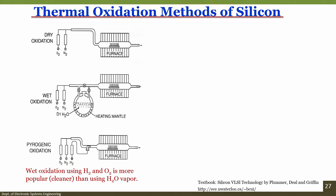To grow silicon dioxide there are three different techniques: the first is dry oxidation, the second is wet oxidation, and the third is called pyrogenic oxidation.